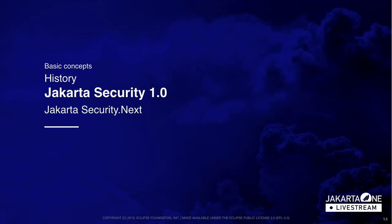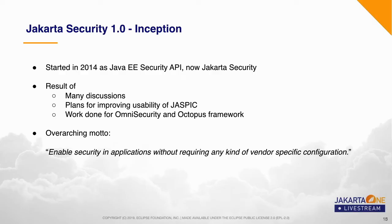Having looked at the history of security in Java EE, we're now going to look at the introduction of Jakarta Security 1.0. Jakarta Security 1.0 was introduced in 2014, back then as the Java EE Security API. When all the Java EE specs were renamed, this one was renamed to Jakarta Security. Jakarta Security has been the result of quite a lot of discussions, including a selection of plans for improving the usability of JASPIC, as well as work done for the OmniSecurity and Octopus Security frameworks. It had one overarching motto: to enable security in applications without requiring any kind of vendor-specific configuration. Back then this was actually quite a radical idea for Java EE.